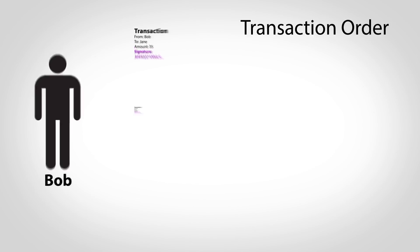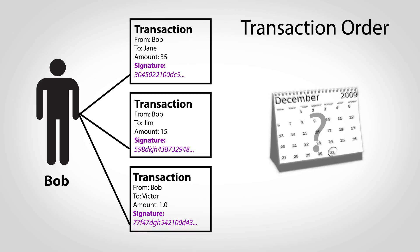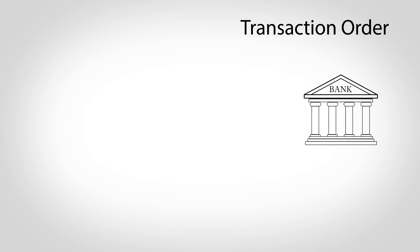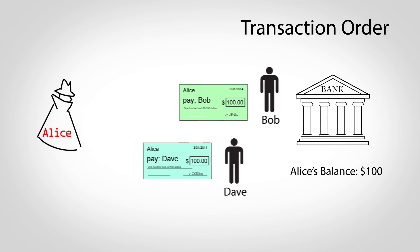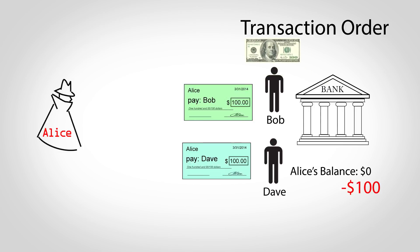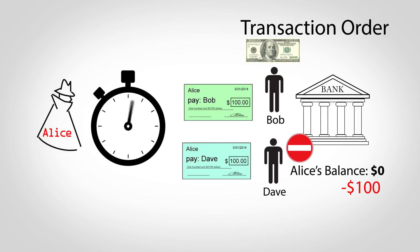While the mathematical signatures prove who sent a transaction, they can't prove when it was sent, and this turns out to be problematic. In our traditional banking system, if Alice wrote two checks, but only had enough money to cover one of them, the bank would pay the first person attempting to cash his check, but refuse the second, because Alice's account would be empty. So the order of these checks is critical, because it determines who should get paid.